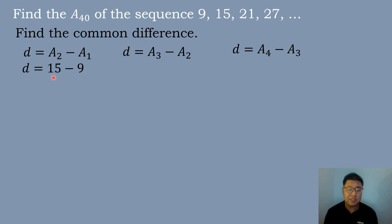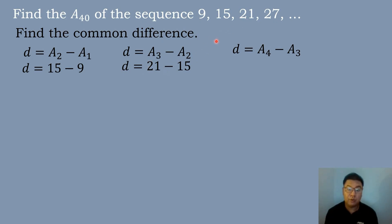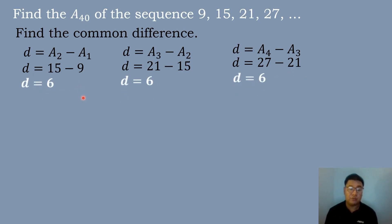The value of the second term is 15, the first term is 9, the third term is 21, the second term is 15, the fourth term is 27, and the third term is 21. Subtracting: 15 minus 9 is equal to 6, 21 minus 15 is equal to 6, and 27 minus 21 is equal to 6. So therefore, the common difference is equal to 6.